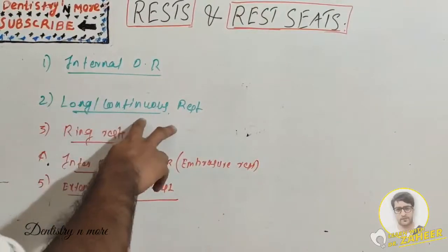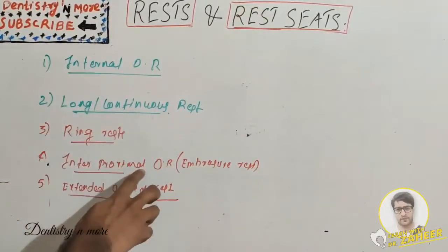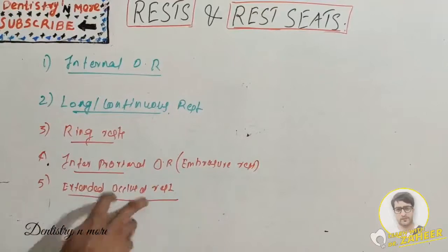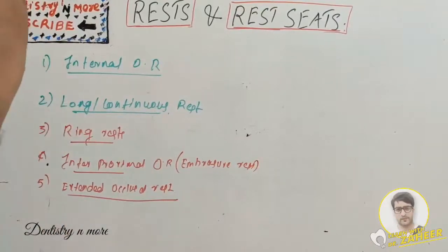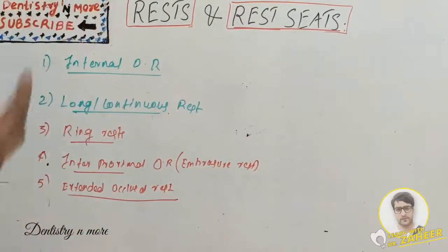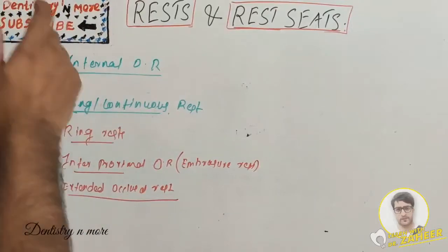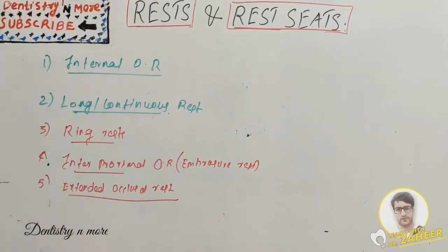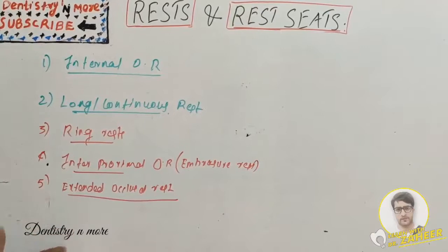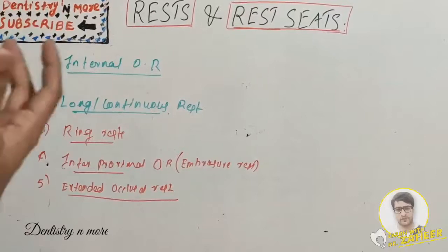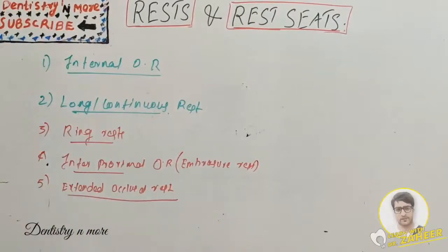To summarize the occlusal rest types: internal occlusal rest, long continuous rest, ring rest, interproximal rest, and extended occlusal rest. These may be asked as long essays, short essays, or short notes in examinations. We also covered how to prepare rest seats on enamel, existing restorations, new restorations, and crowns.